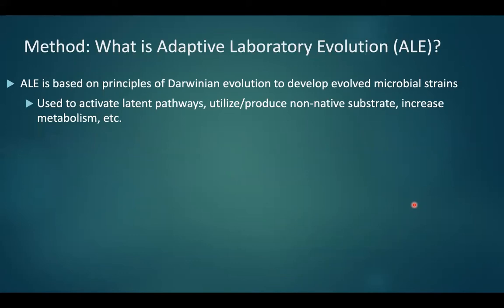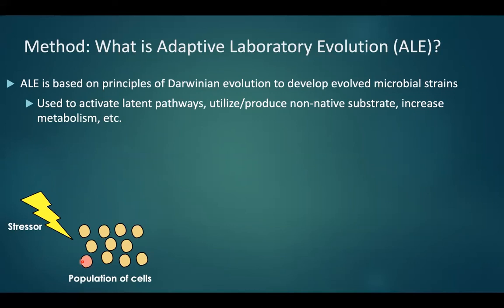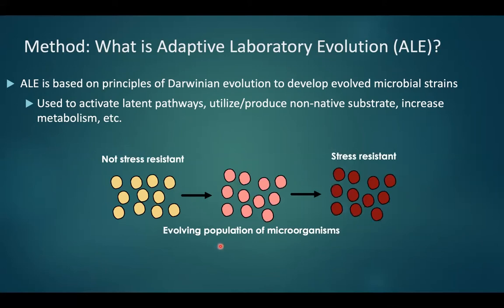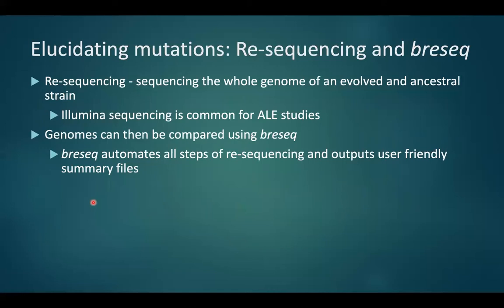Adaptive laboratory evolution, or ALE, is based upon principles of Darwinian evolution to develop evolved microbial strains. Starting with an original population of cells, if you increase a given stressor — in this case magnesium chloride — some rare survivors may have better adaptation through random mutation. This results in a population slightly more tolerant to the stressor, and continuing down the line yields a stress-resistant lineage nearly genetically identical to the starting strain.